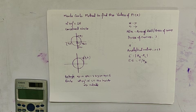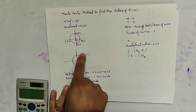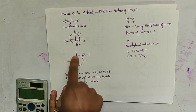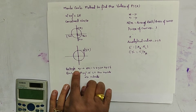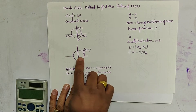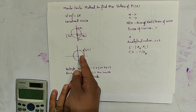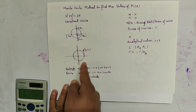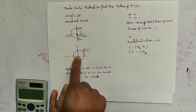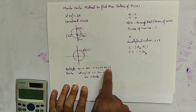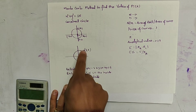Let us draw a boundary in the first quadrant. When we draw the boundary lines, it becomes a square. That means x is greater than or equal to 0 and x is less than or equal to 4. Similarly, y is greater than or equal to 0 and y is less than or equal to 4. This is the boundary of the square.